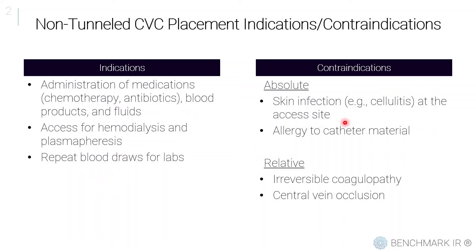Indications for non-tunneled central venous catheters include administering medications such as chemotherapy — usually given long-term over a central venous catheter rather than peripheral — antibiotics, blood products, fluids, access for hemodialysis and plasmapheresis, and blood draws for labs. Absolute contraindications include skin infection such as cellulitis at the access site — you may want to try another site. Always review allergies to catheter material. Relative contraindications are irreversible coagulopathy and central vein occlusion.